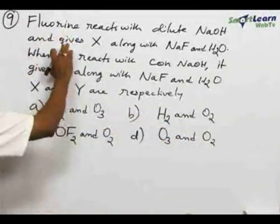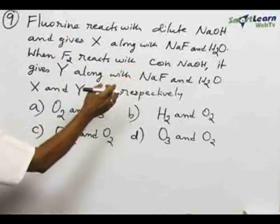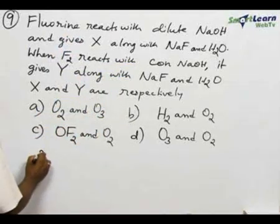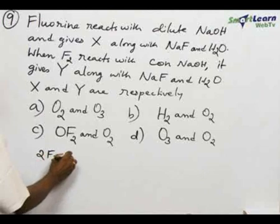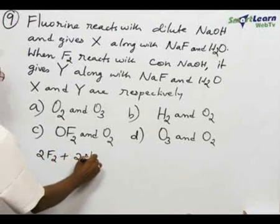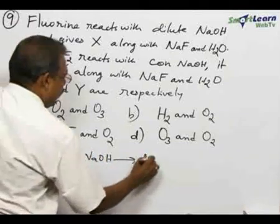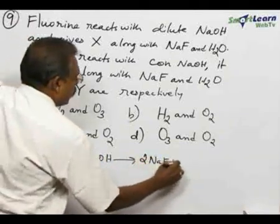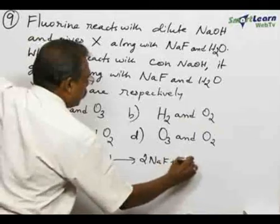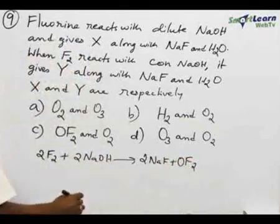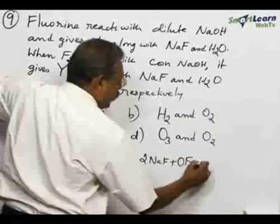Fluorine reacts with dilute alkali. The reaction is 2F2 plus 2NaOH giving 2NaF plus OF2 plus H2O.